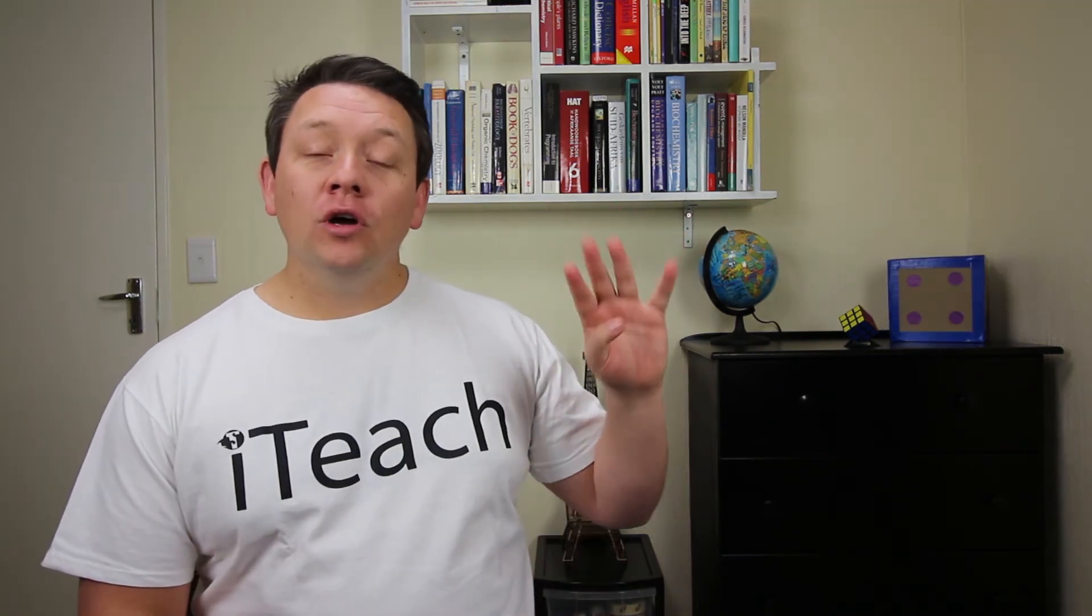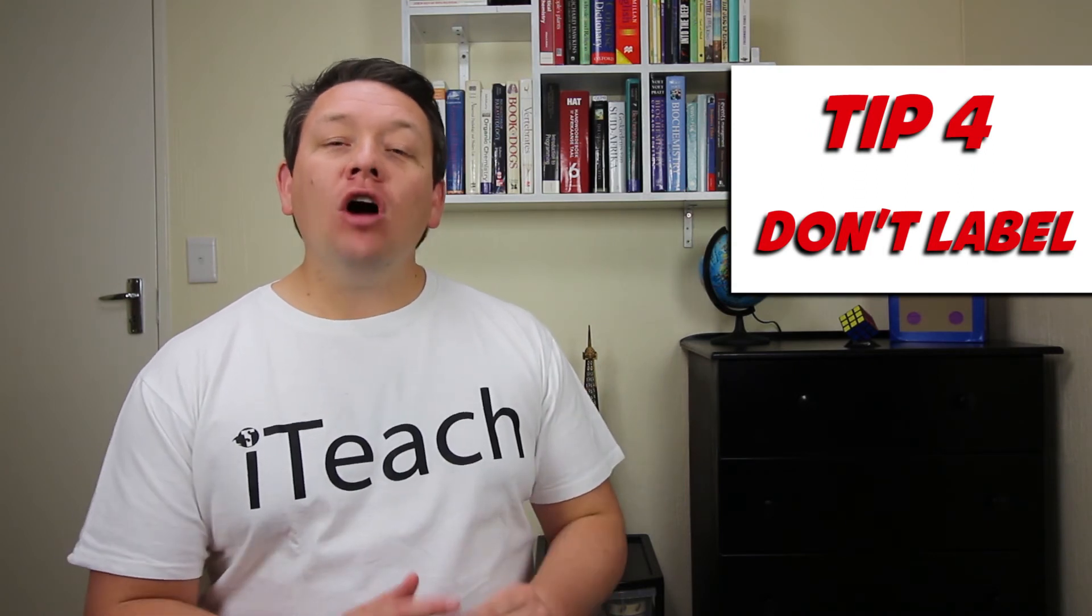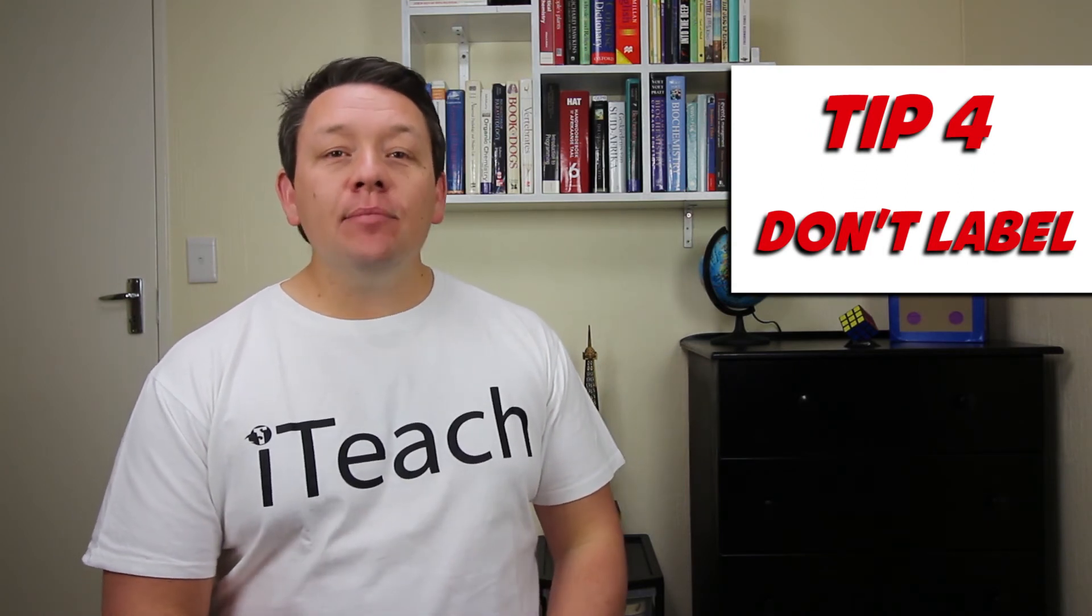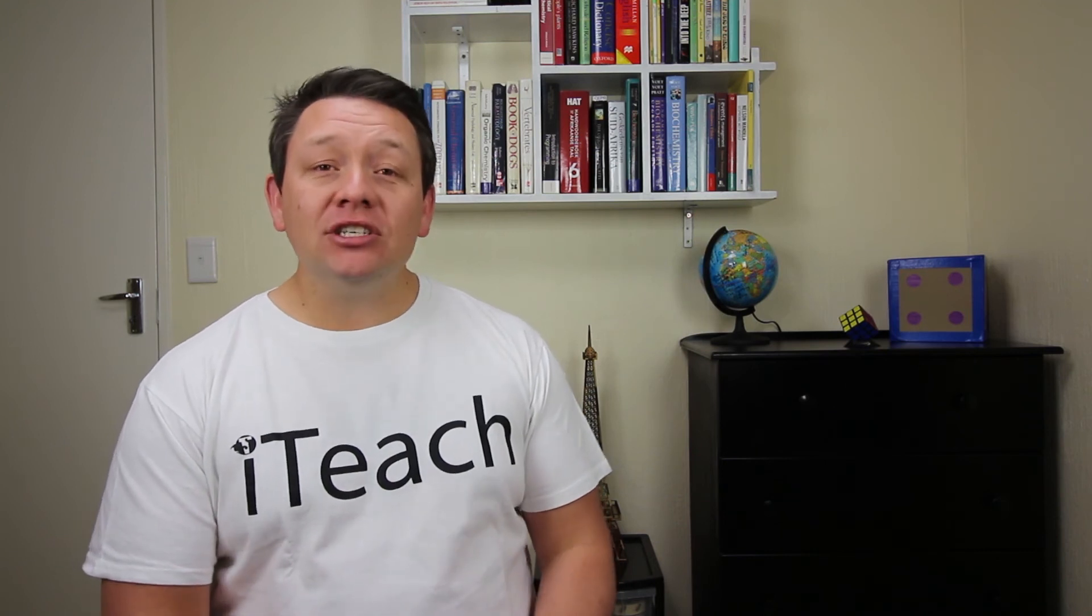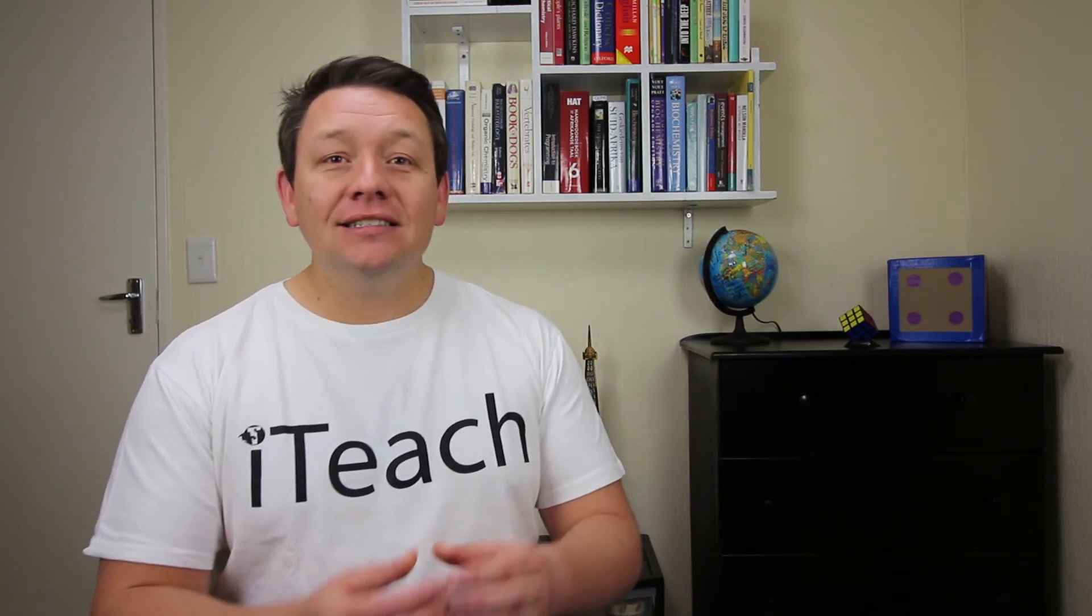Tip number four. Don't label. We often fall for the trap to label a child by one of their distinguishing features. We would often tell other teachers, you know, that dyslexic child I have in my classroom. This is detrimental. You are building up a prejudice against that learner. Remember, a learner that is dyslexic isn't just dyslexic. That learner is still a person who happens to have dyslexia.